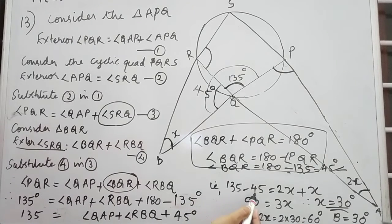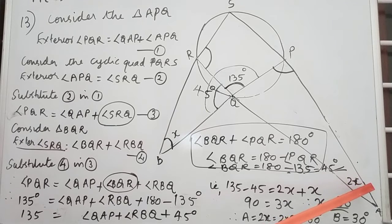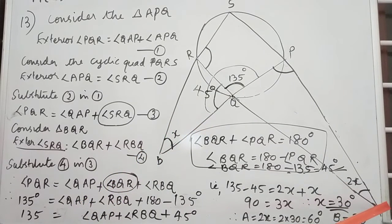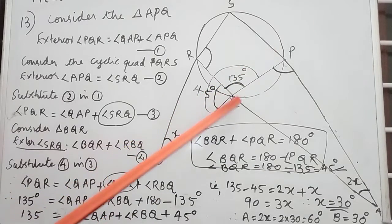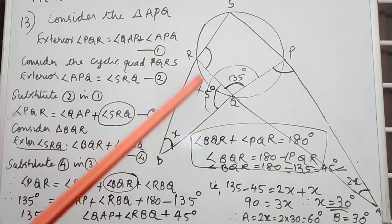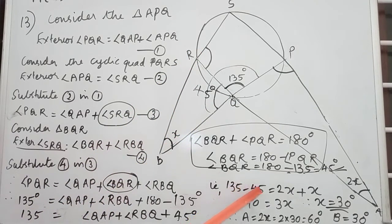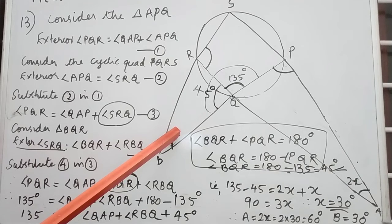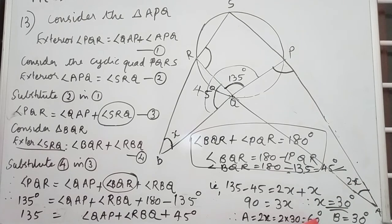Moving 45 to the left side: 135 minus 45 equals 90. Since angle A to angle B equals 2 to 1, we write angle A as 2X and angle B as X. So QAP equals 2X and RBQ equals X. Therefore 90 equals 2X plus X equals 3X, giving X equals 30 degrees. Angle B equals 30 degrees and angle A equals 2 times 30, which is 60 degrees.